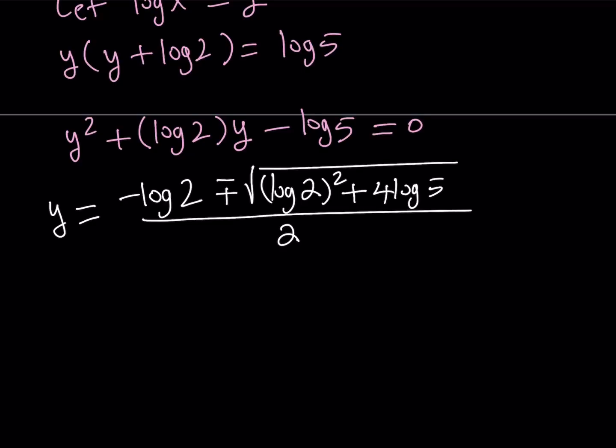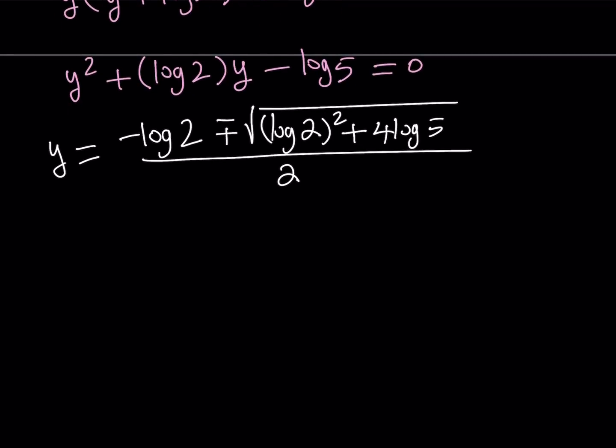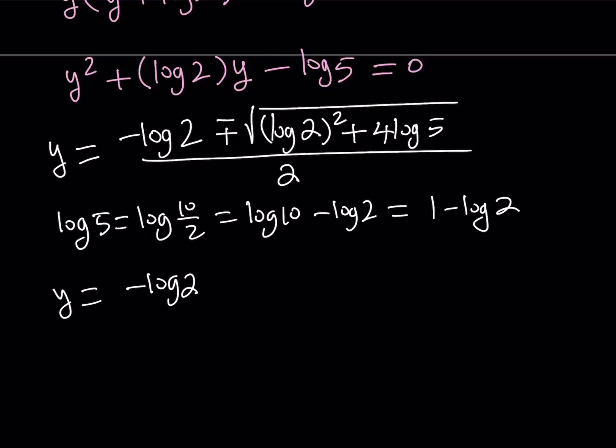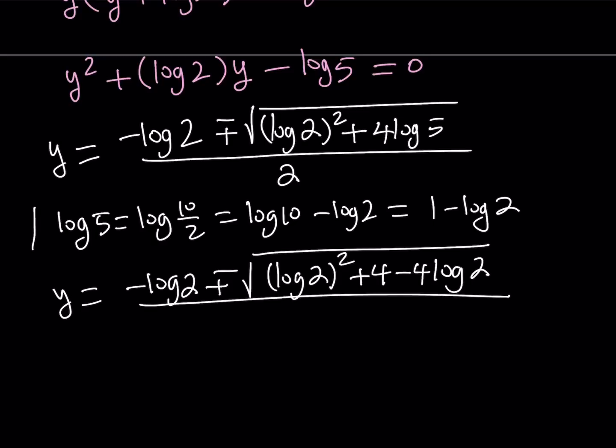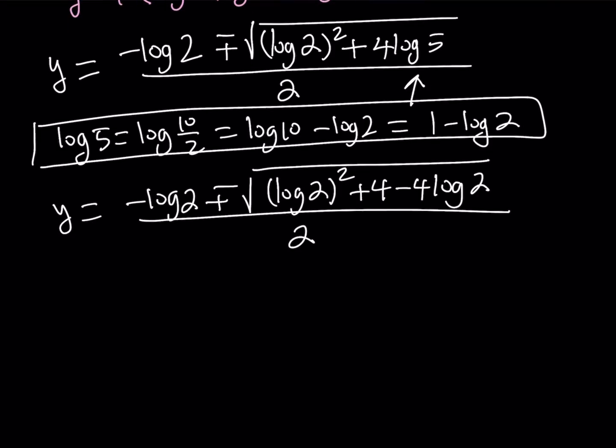Now at this point, I want to convert log 5 into log 2 by using the fact that log 5 is log 10 over 2, which can be written as log 10 minus log 2, which can be written as 1 minus log 2. If you do the replacement, you're going to get 4 times this, which is 4 minus 4 log 2. So I did the replacement here and replaced the log 5 with that, and then that is divided by 2.